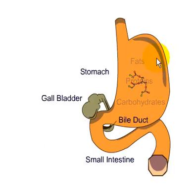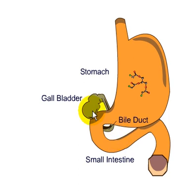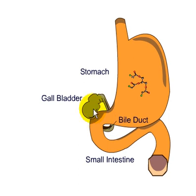The food goes into the stomach and digestion begins. Digestion of carbohydrates begins even in the oral cavity, but digestion continues in the stomach and then in the intestine. Those molecules then travel into the small intestine, where bile salts produced by the gallbladder will emulsify the fat.